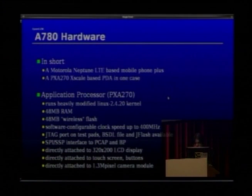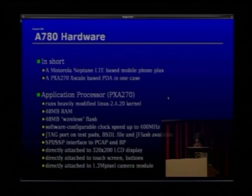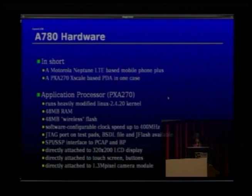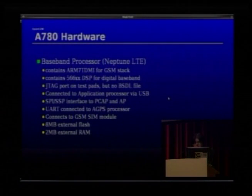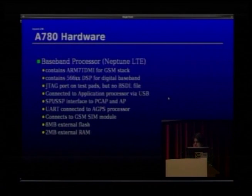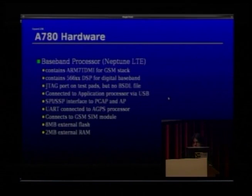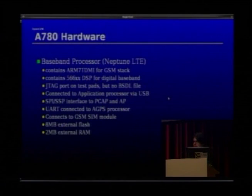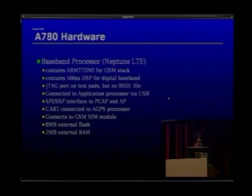The display is 320x240 LCD with a directly attached touchscreen, buttons, and a 1.3-megapixel camera. The baseband processor contains an ARM7 TDMI for the GSM stack and a 56620 DSP for the digital baseband. It also has a JTAG port, but since such chips aren't publicly documented there's no BSDL file. It connects to the application processor via USB, and uses SPI/SSP to the two other major chips. It connects via UART to the AGPS module and to the GSM SIM module, with 8MB external flash and 2MB external RAM.